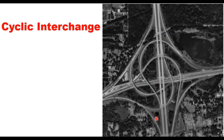In a cyclic interchange, a right turn from one direction takes a loop and then proceeds to the right turn destination. As discussed, there are hundreds of designs available worldwide, but the basic shapes are only six or seven.